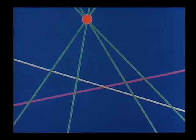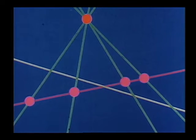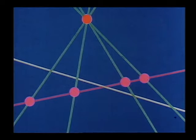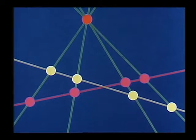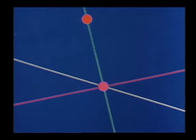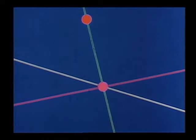A perspectivity has a center not on either range. It maps the points of one range onto the points of the other. It maps the point of intersection onto itself. This point is invariant under the perspectivity.